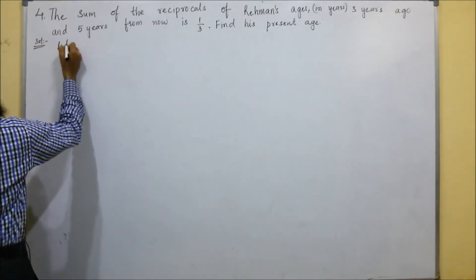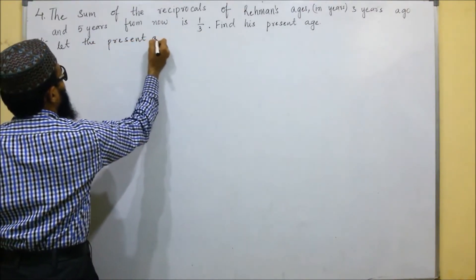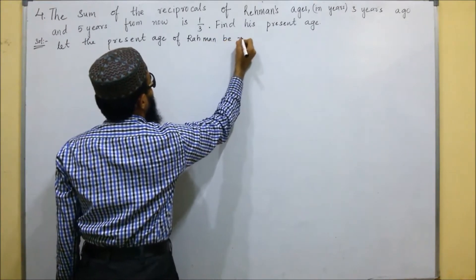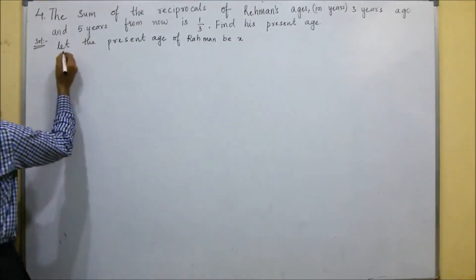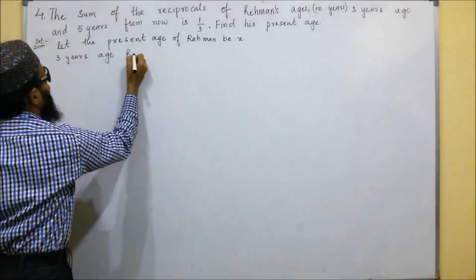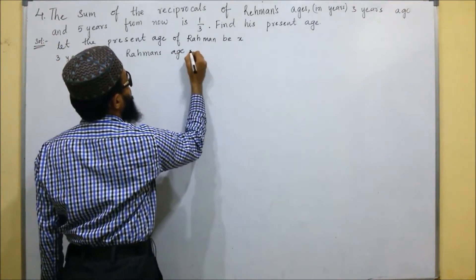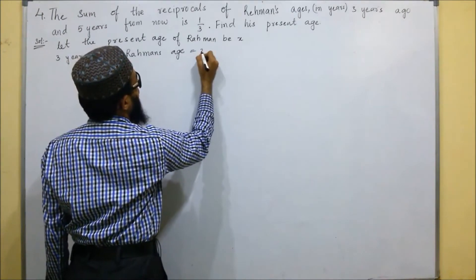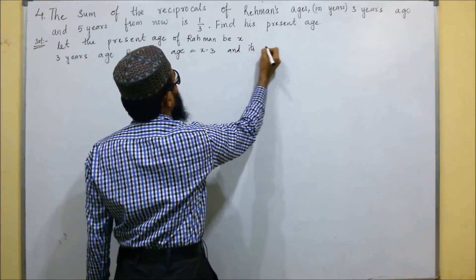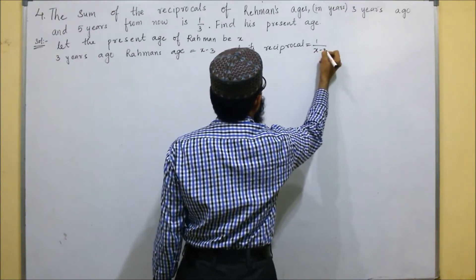Let the present age of Rahman be X. Then three years ago, Rahman's age will be X minus three, and its reciprocal is one by X minus three.